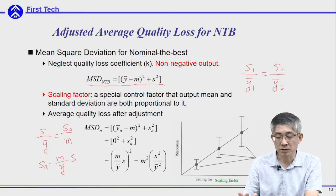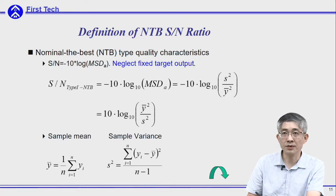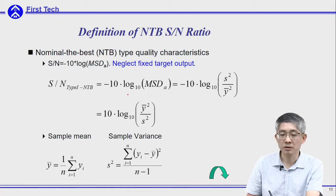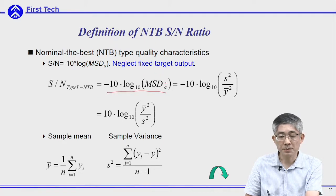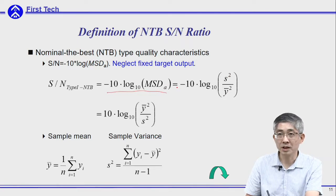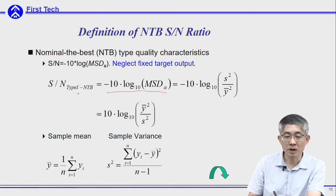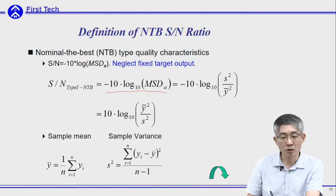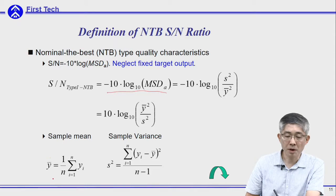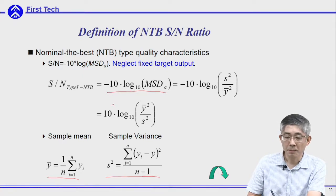By substituting these numbers into the equation, we obtain the mean square deviation after the second-stage modification. We can substitute this adjusted mean square deviation into the SN ratio formula. The adjusted mean square deviation is s² / ȳ². By using the properties of logarithms and moving the minus signs inside, the SN ratio for nominal-the-best becomes 10 multiplied by log(ȳ² / s²), where ȳ is the average output and s² is the variance of the samples.